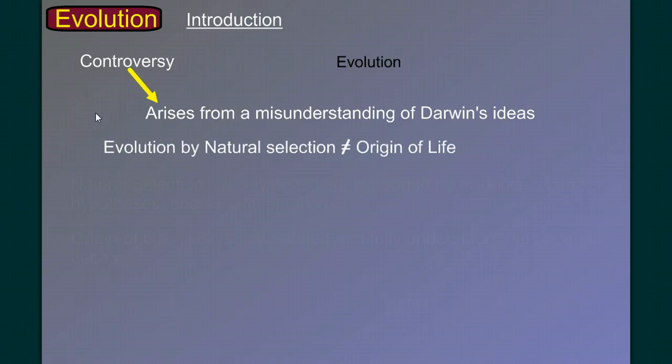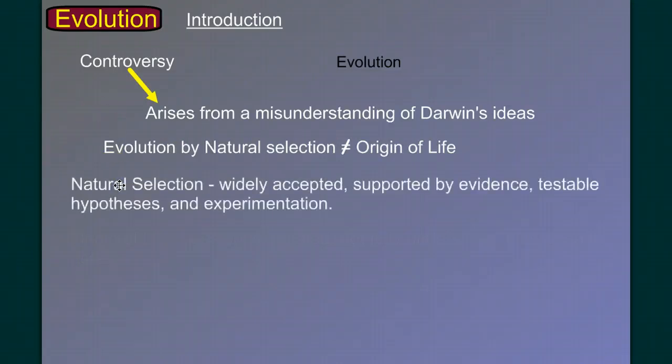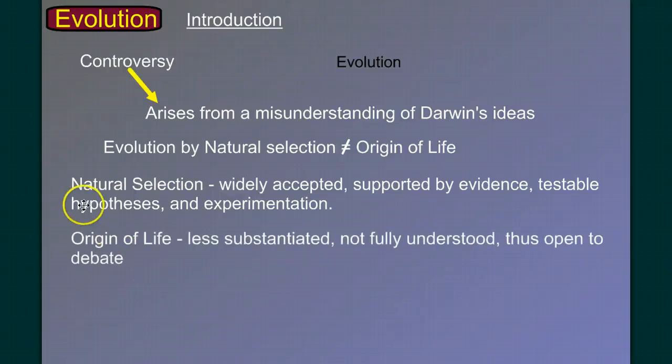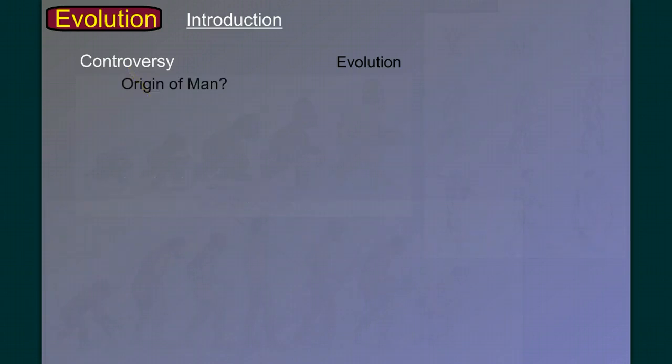These are two separate issues and we'll discuss both. Natural selection is a widely accepted idea supported by much scientific evidence, testable hypotheses and experimentation, whilst the origin of life is less substantiated, not fully understood, and open to debate. Darwin's ideas did not attempt to explain the origin of life, but instead the origin of species. There have been many inquiries into the origin of life with no definite conclusions. Later in this series of videos, we will investigate the possible chemical evolution that would have made life on Earth possible.